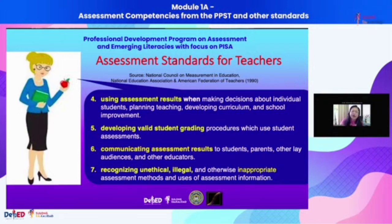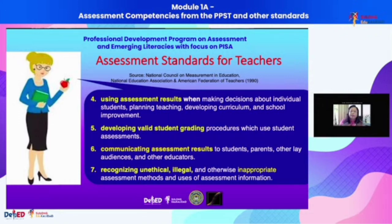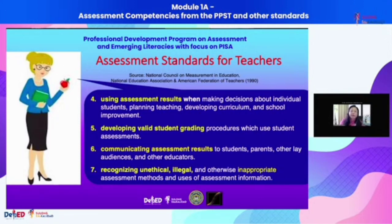The sixth competency is communicating assessment results to students — the main beneficiaries — as well as to parents, other lay audiences, and other educators. The seventh competency is being able to recognize unethical, illegal, and otherwise inappropriate assessment methods and uses of assessment information.